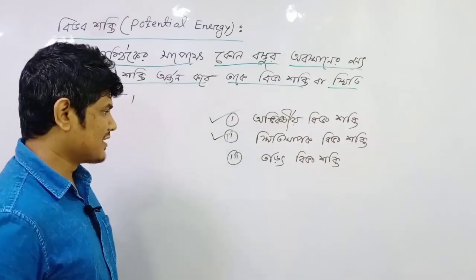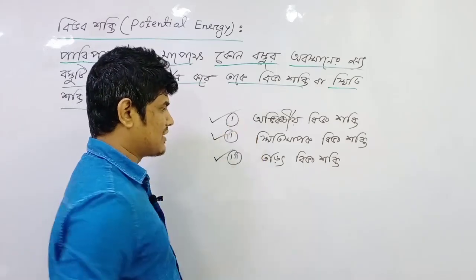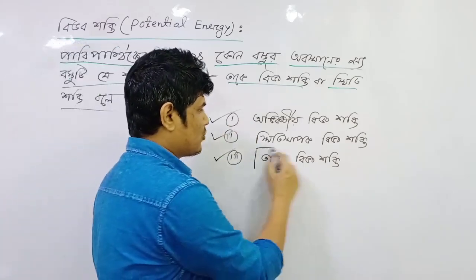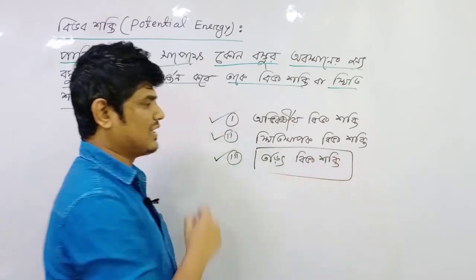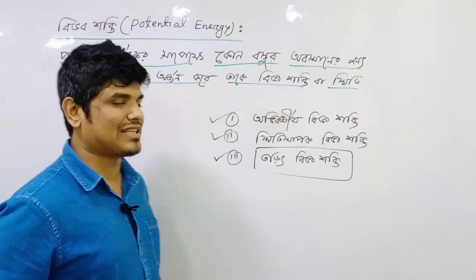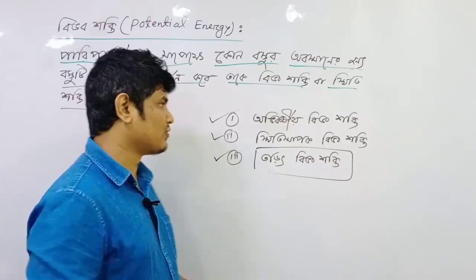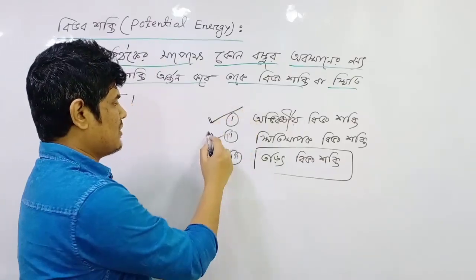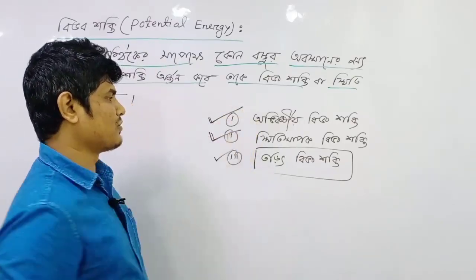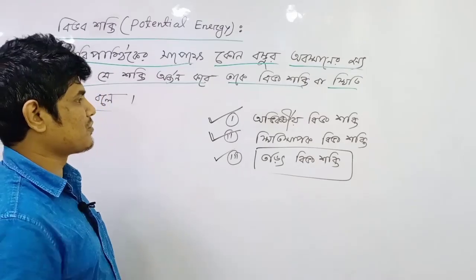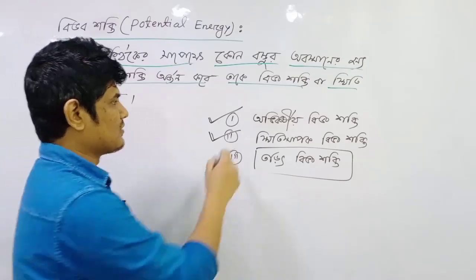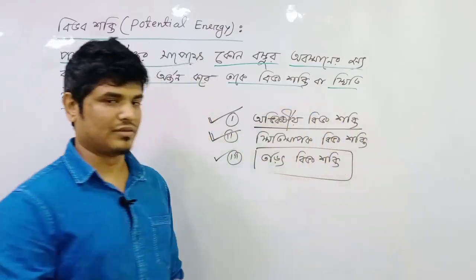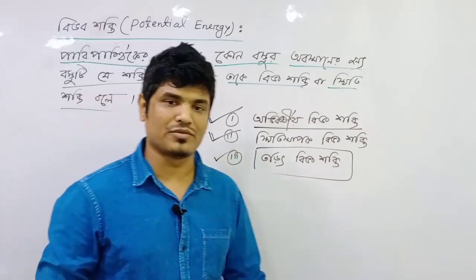This is the 3rd chapter of our university course. In this chapter, you can learn that the 4th topic of registering is in total. Then from the beginning, you can learn that the signs are in total. So this is the 3rd chapter of our university.